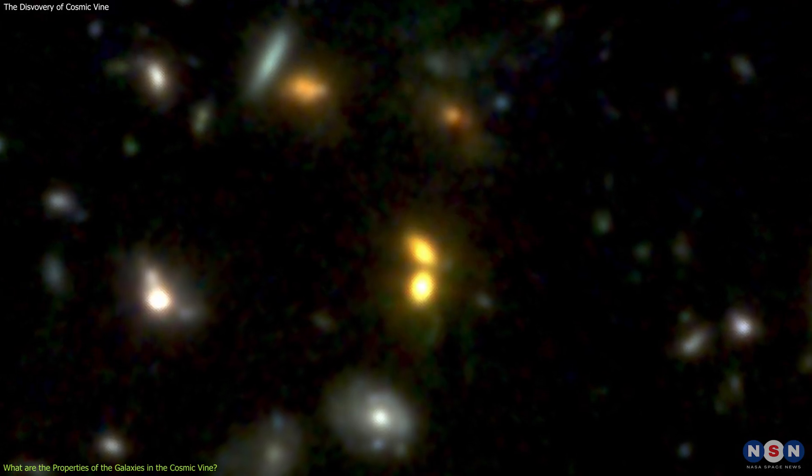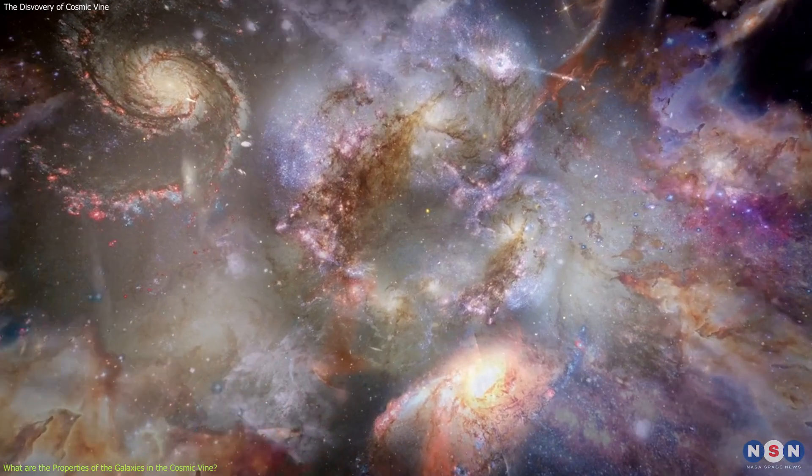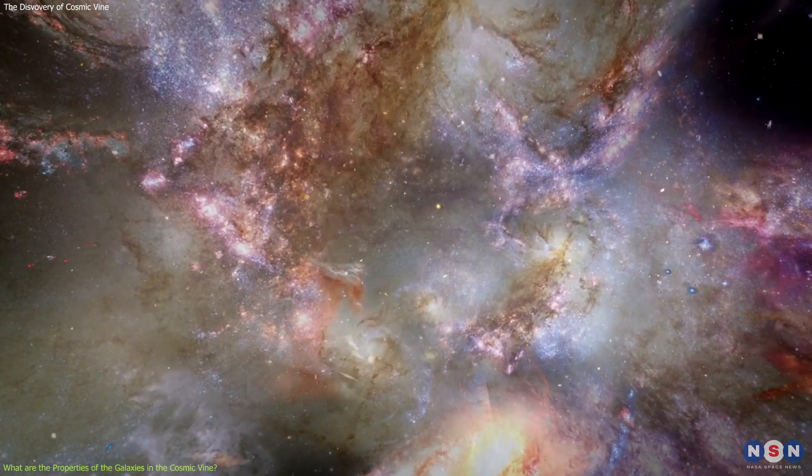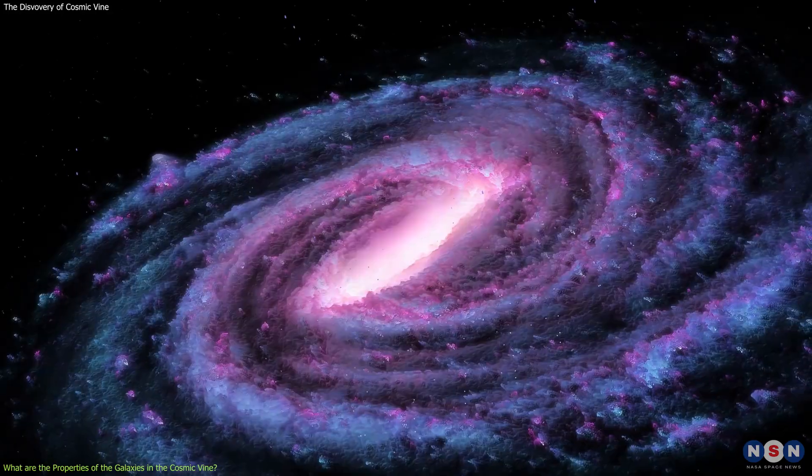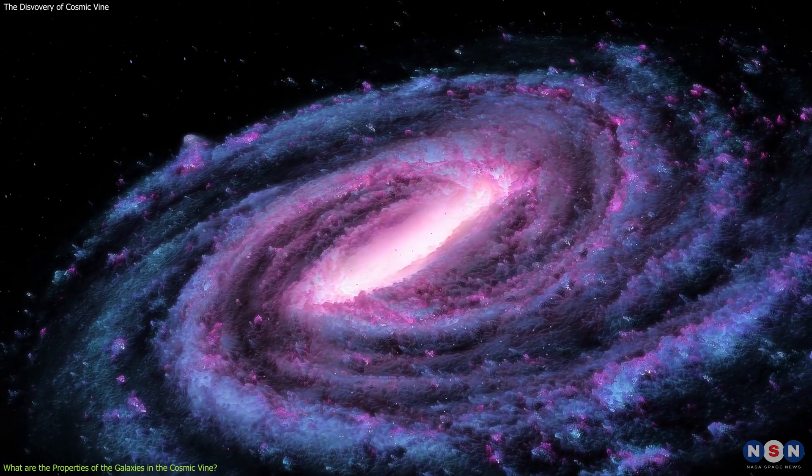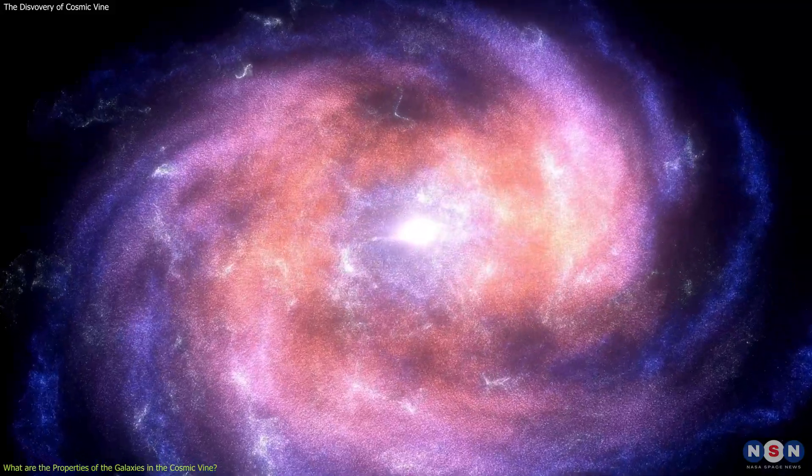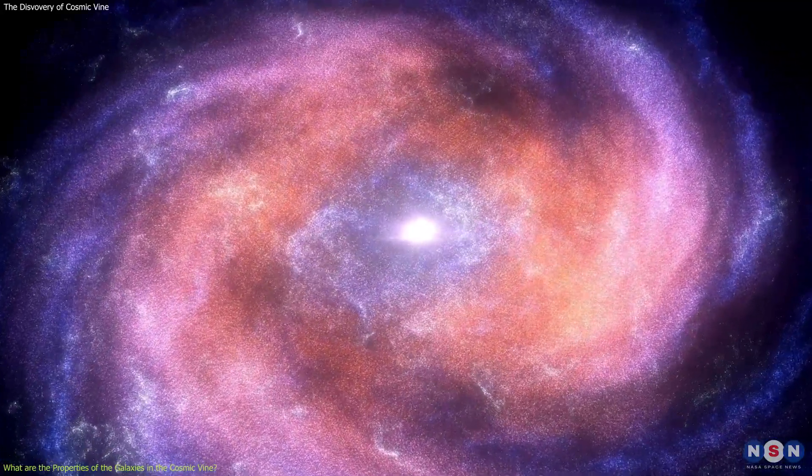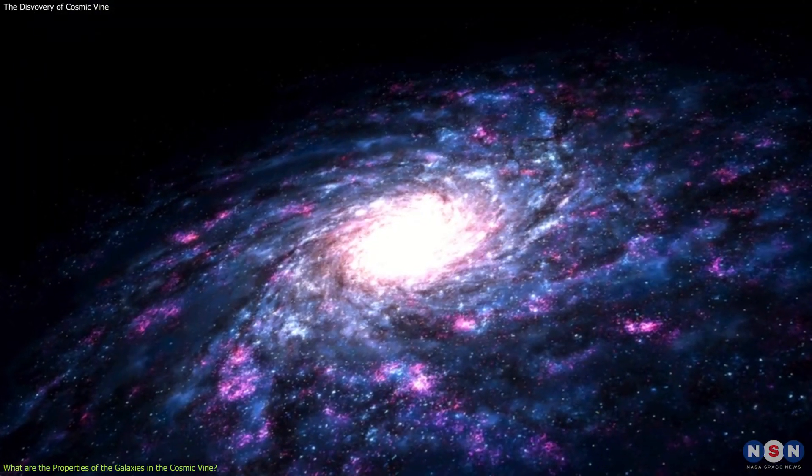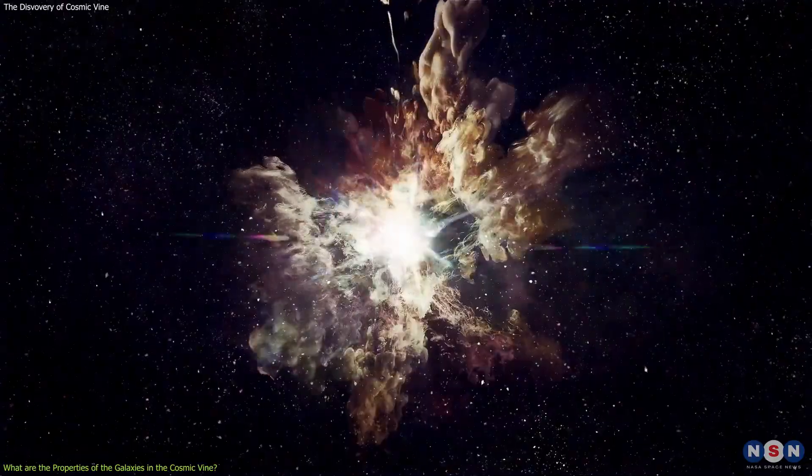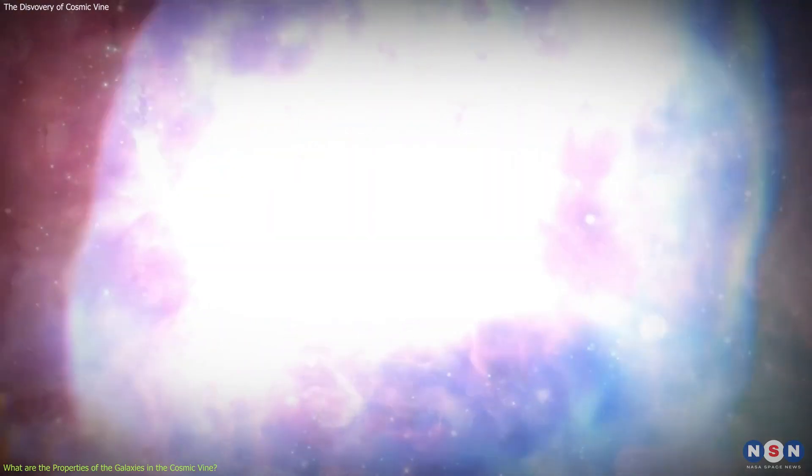The galaxies in the Cosmic Vine also have a wide range of dust contents, from 0.01 to 1 solar masses. The dust content is the amount of interstellar dust in a galaxy, which is composed of tiny grains of carbon, silicon, and other elements. It is an indicator of how enriched and evolved the galaxy is, as dust is produced by the death of stars and the chemical reactions of gas.